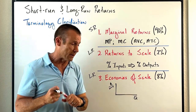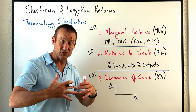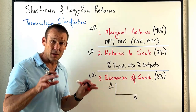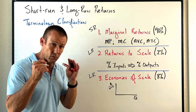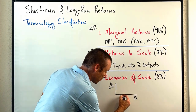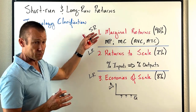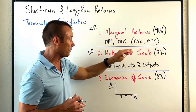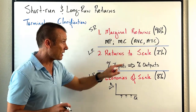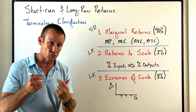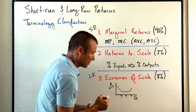Finally, economies of scale — also called economies of size. We're changing the scale of production, but we're not restricted to increasing every single input by the same percentage. We're just trying to be as efficient as possible as we move from one production level to another. On this graph, we have dollars per unit on the vertical axis and quantity on the horizontal axis — and it's not the short-run average total cost curve, it's the long-run average total cost curve.